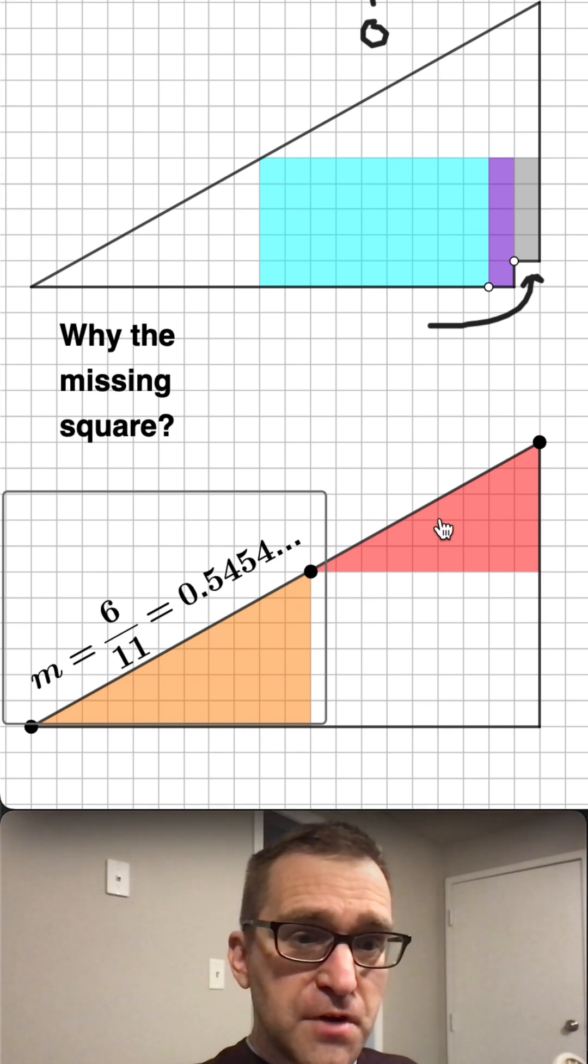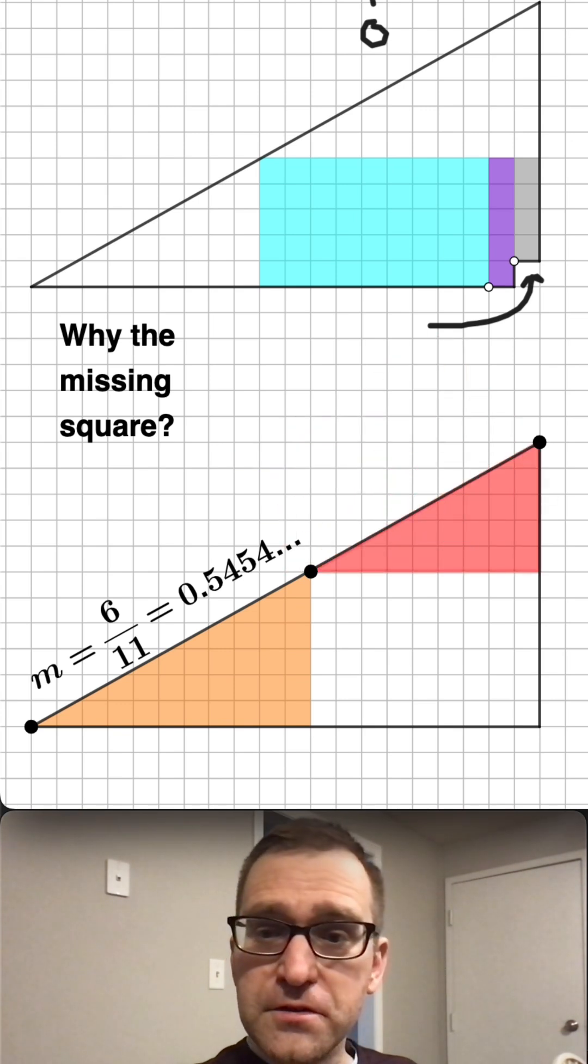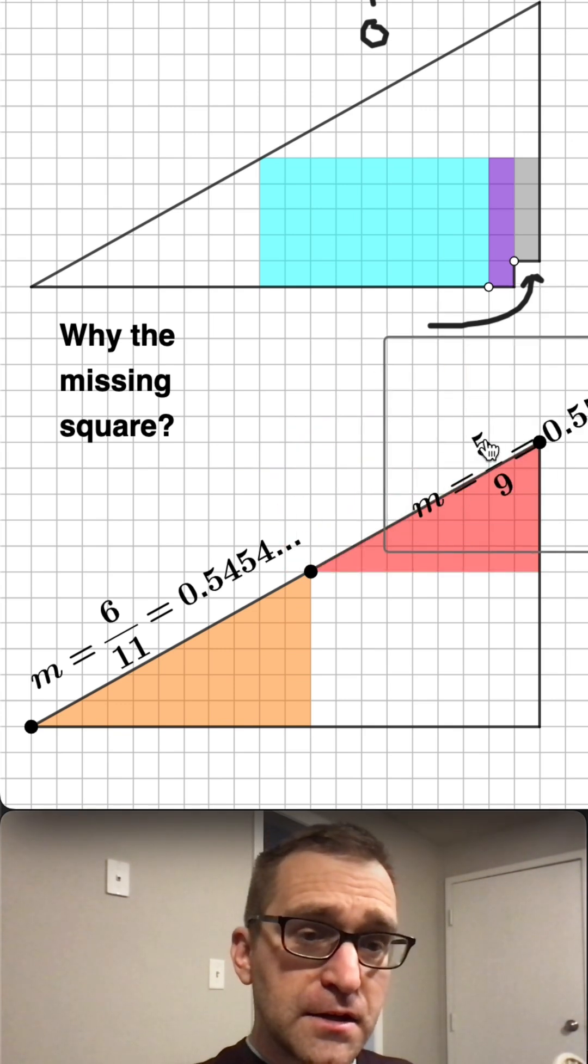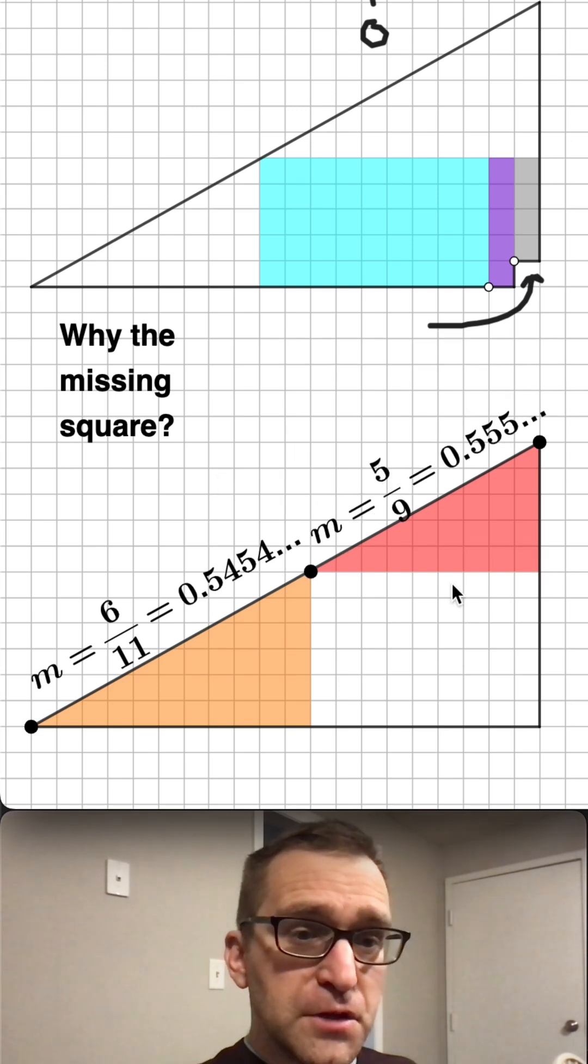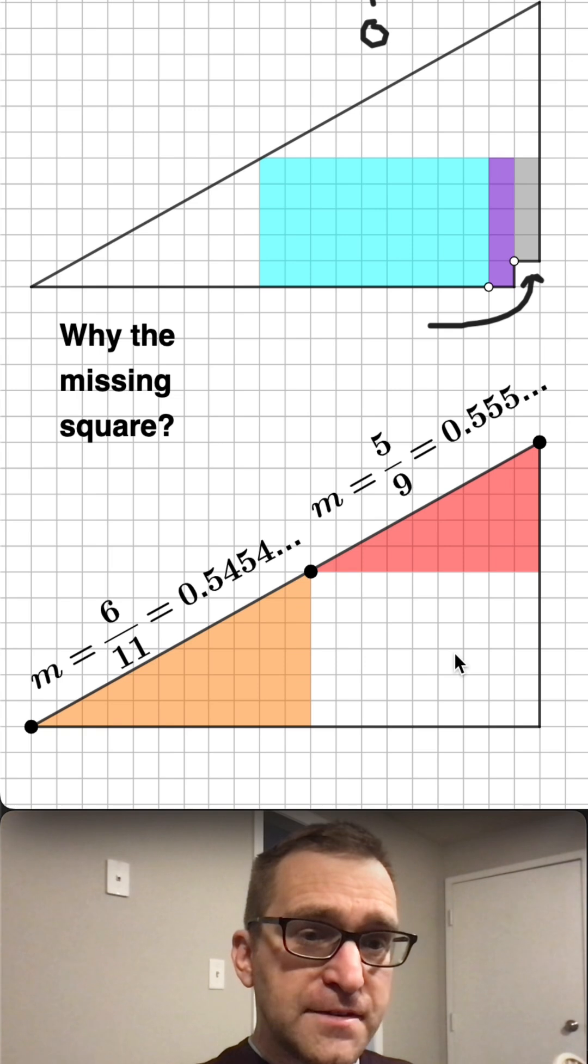But if we look at this triangle right here, the slope of that triangle is actually 5 divided by 9, which is 0.55555 repeating. Look at those decimal equivalents. They're like practically identical.